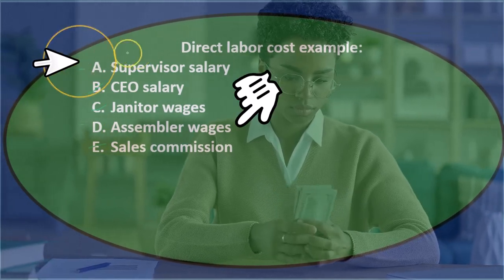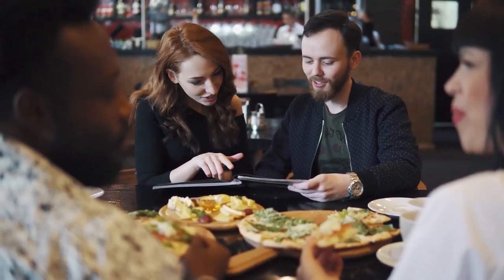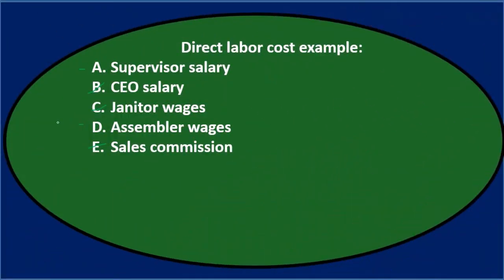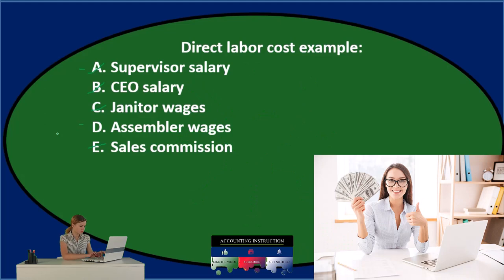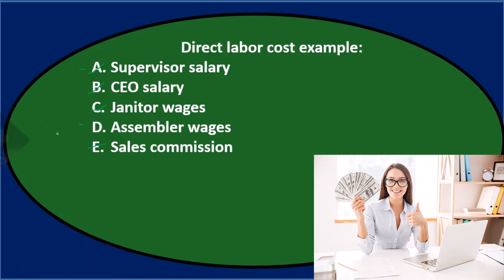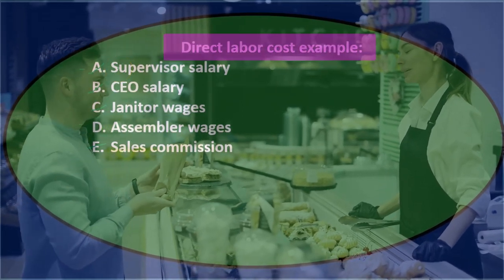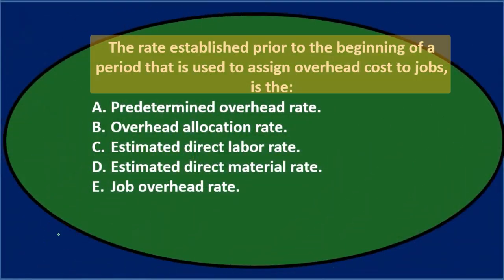Between A and D: supervisor salary or assembler wages. Typically a supervisor walks around overseeing all jobs, so we can't pinpoint exactly which job they're working on as specifically as we can with the assembler. In a job cost system with custom products, we know exactly which product the assembler is working on because they'd document it on the job sheet. Final answer: direct labor cost example — D) assembler wages.